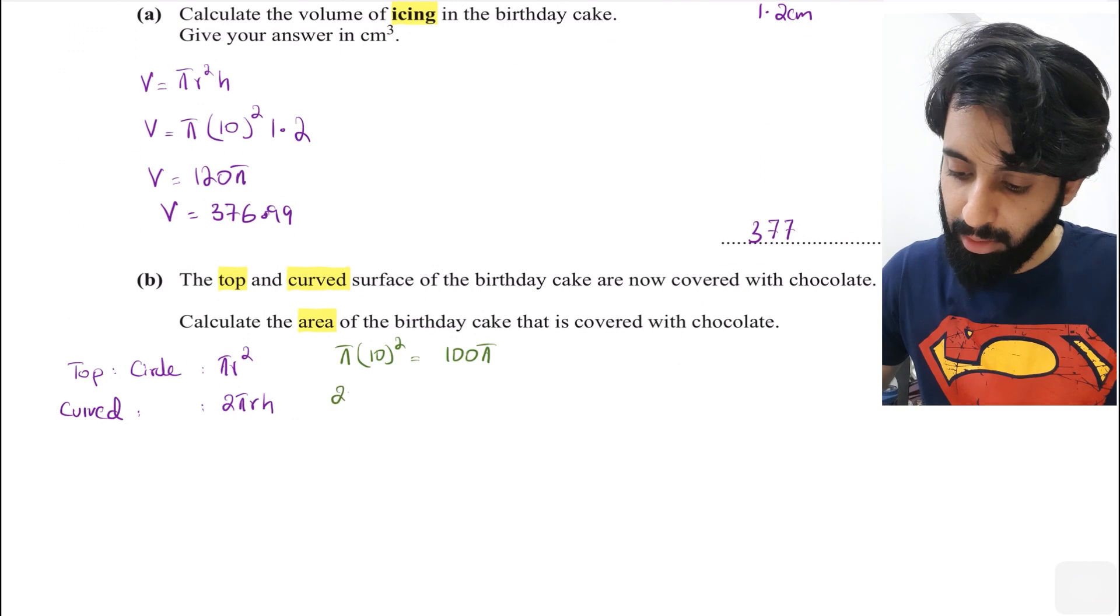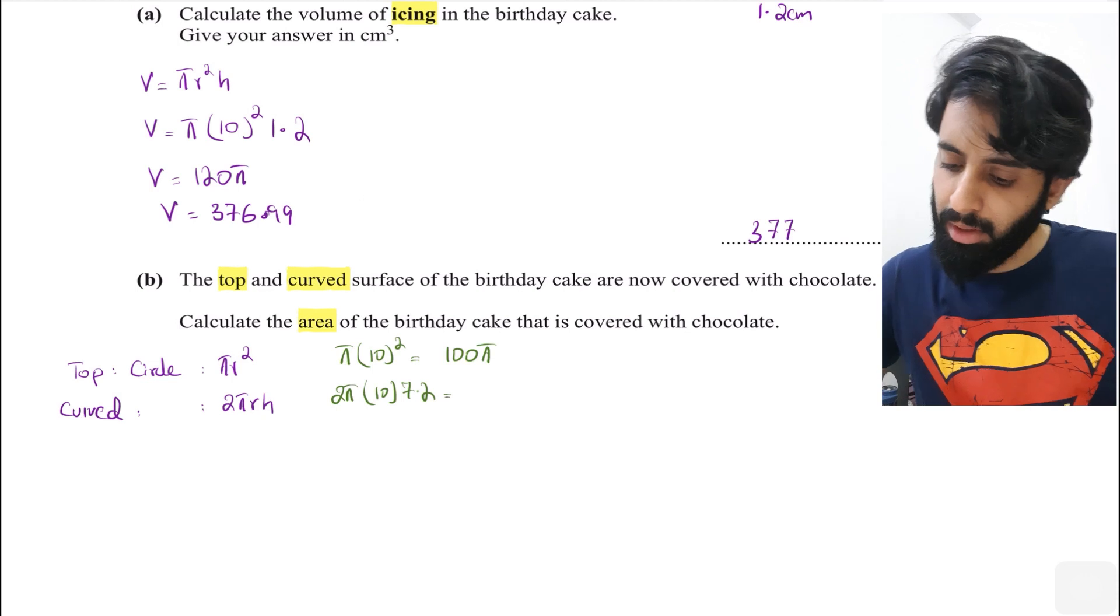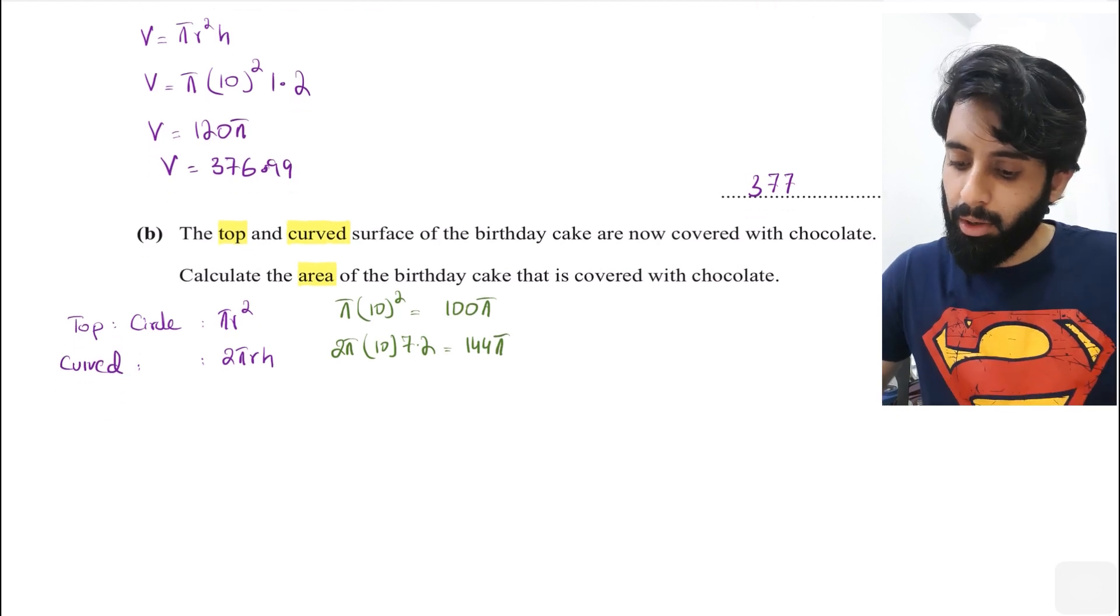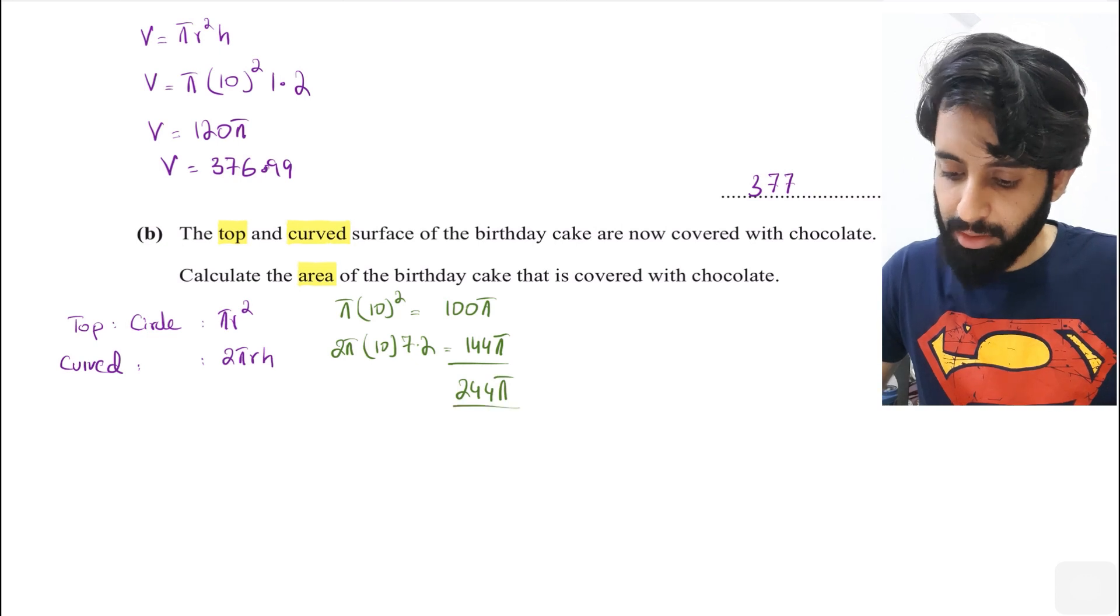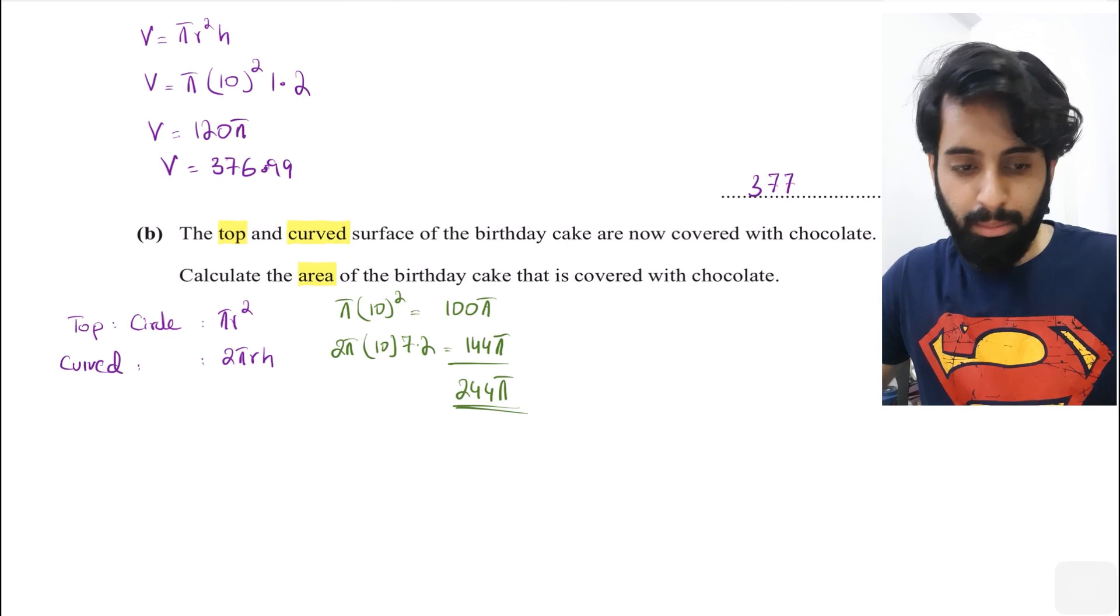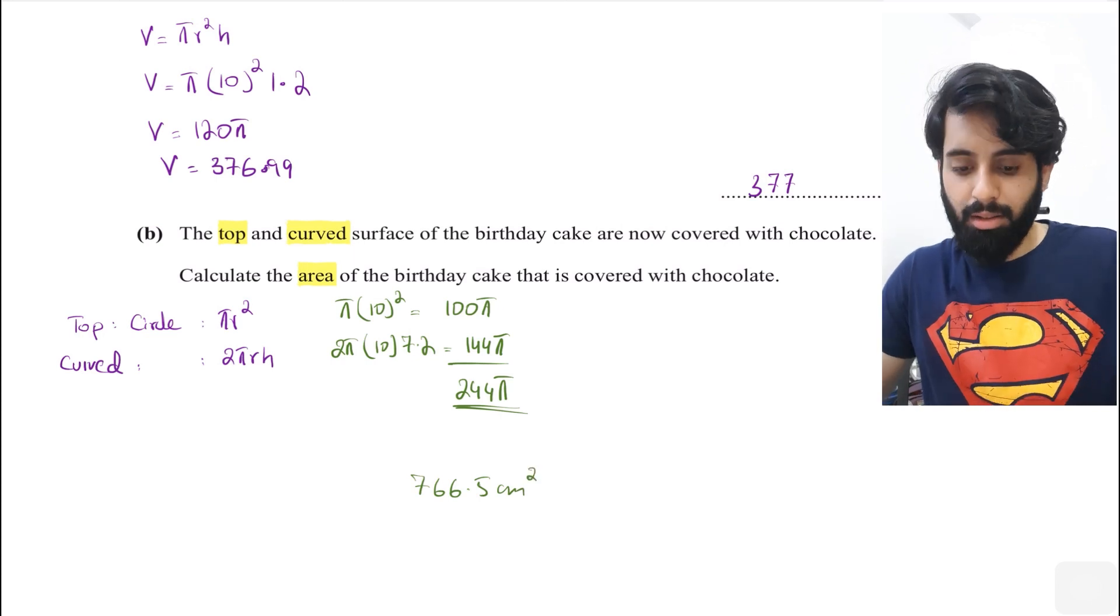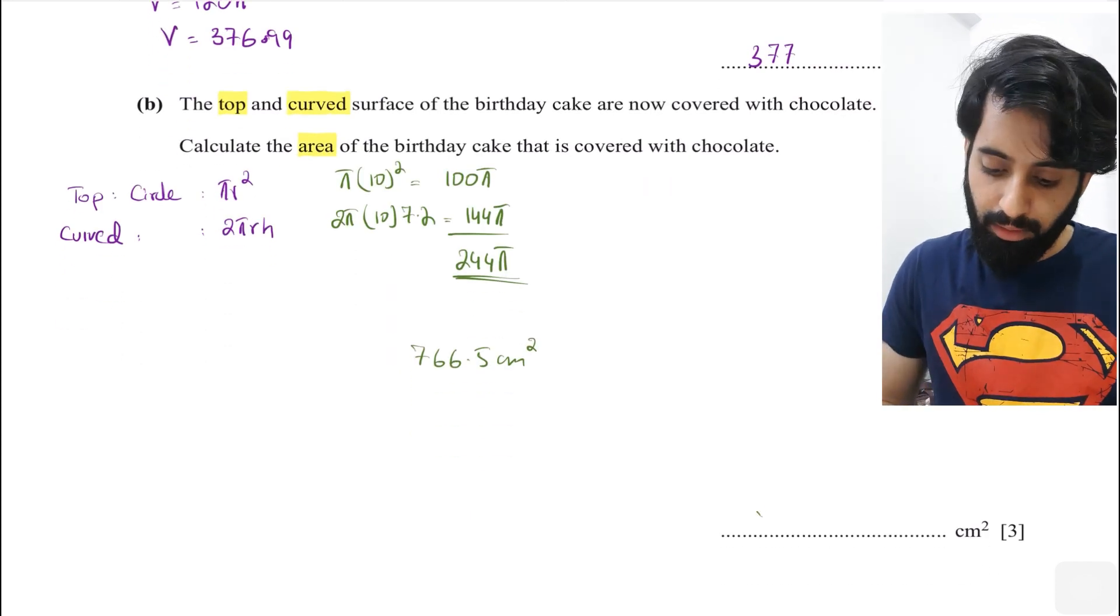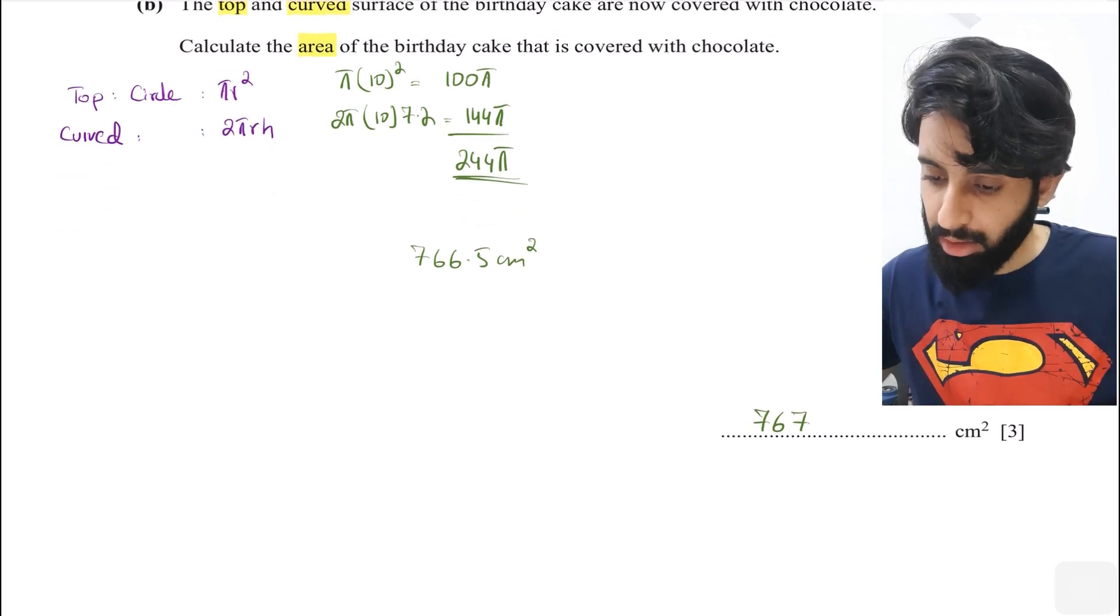Let's work this out: 2π times radius 10 times height 7.2. 72 times 2 is 144, so 144π. If we sum them up, 100π plus 144π becomes 244π. Let's work this out: 244 times π gives 766.5 centimeters squared. Rounded to three significant figures, this is 767 cm². That was part B.